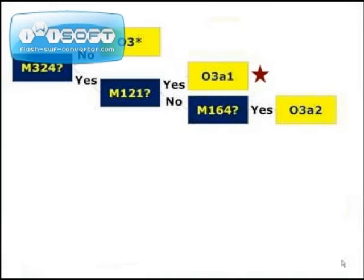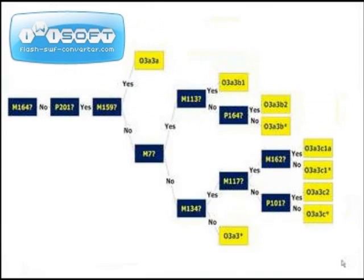Presence of M164 places you within the O3A2 lineage. If you do not have SNP M164, you are either in subclades O3A3, O3A4, O3A5, or O3A6. If you do not have M164, the next SNP result to check is P201. If you have this SNP, you are in subclade O3A3, the most complex subclade in haplogroup O.